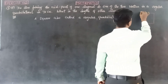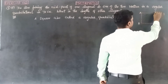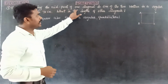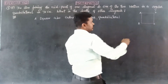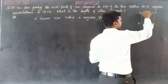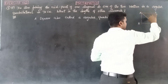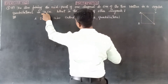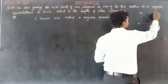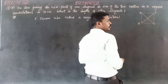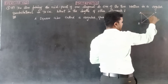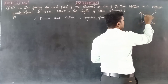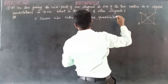So ABCD is a square. The problem states the line joining the midpoint of one diagonal to one of the two vertices. So A and C are the two vertices of diagonal AC. The midpoint of diagonal AC is point O, and the distance from A to O is 70 cm.